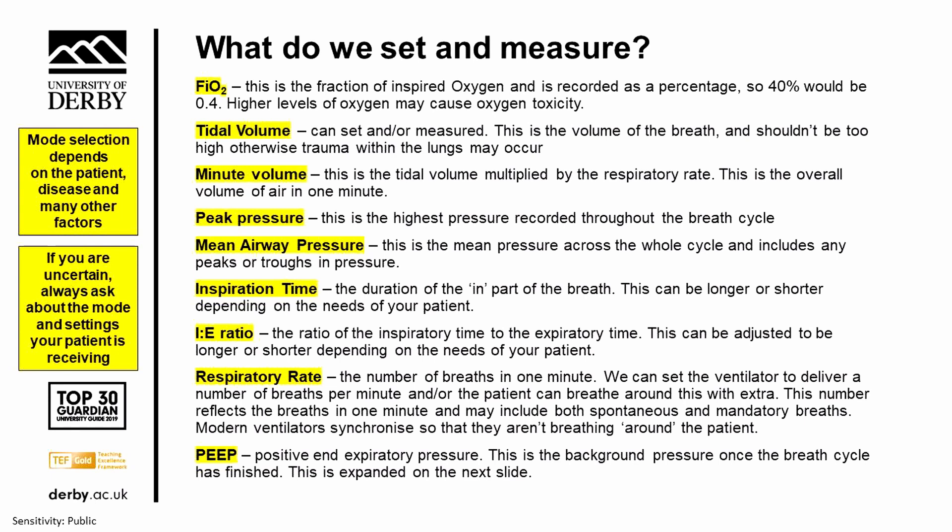Minute volume is the tidal volume multiplied by the number of breaths in a minute, telling us the total volume of air delivered in one minute. Peak pressure is the highest pressure recorded throughout the cycle, and again this should not be too high, as it can cause trauma to the lungs. Sometimes ventilators will also give us mean airway pressure — the pressure across the whole cycle — so we can keep an eye on that as well.